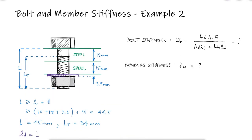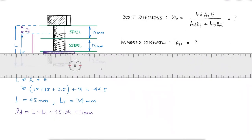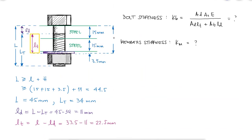With the same threaded length, we find the same non-threaded length and the threaded length within the grip.